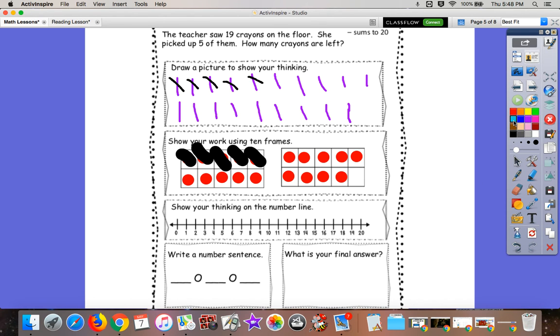Now let's go to our number line. What number are we going to start at? 19. That's right. That's how many were on the floor. So that's our number we've been starting with every time. And how many crayons were picked up?